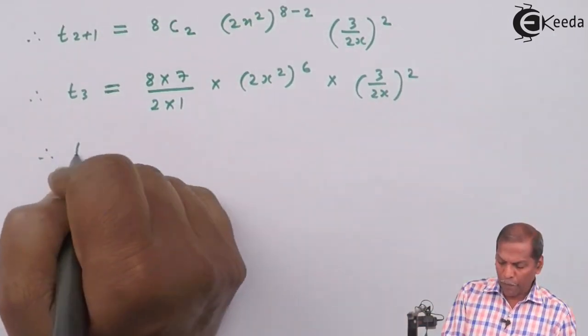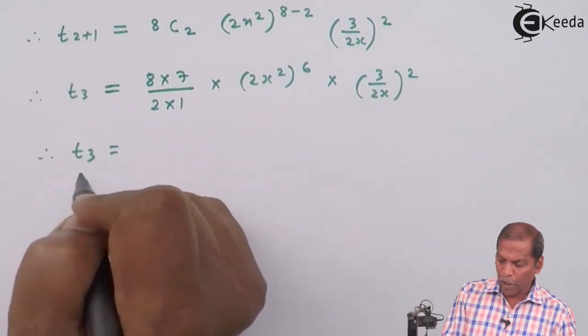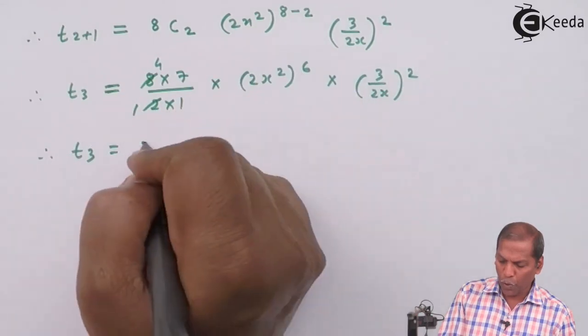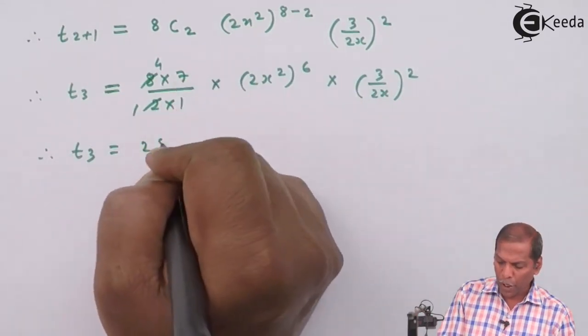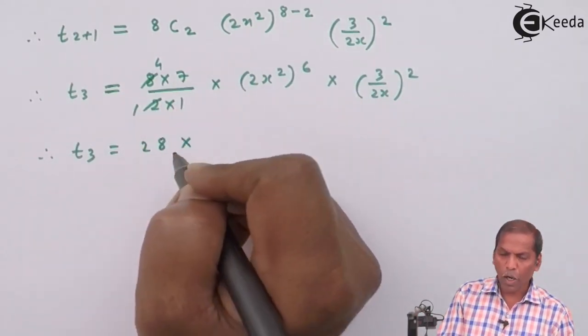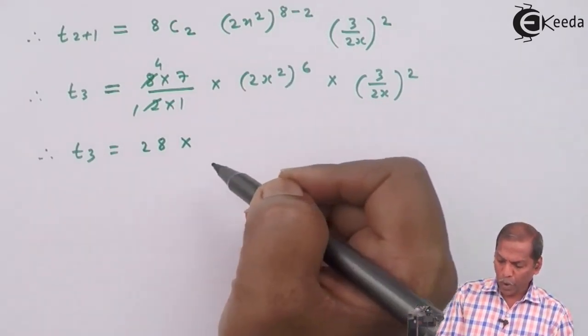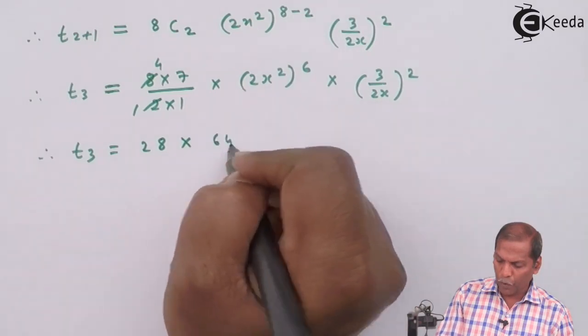On simplifying further, t₃ = 4×7, that gives 28 × 2⁶, which is 64.